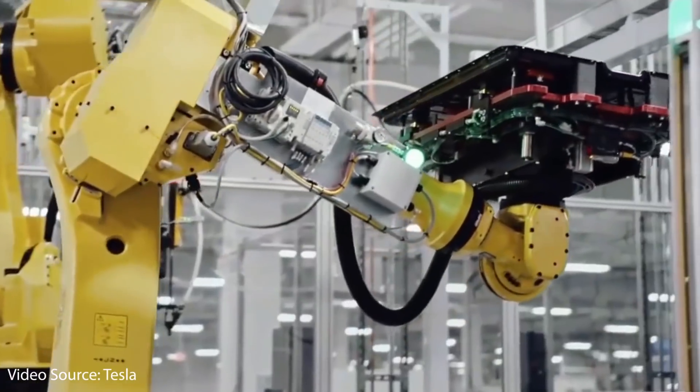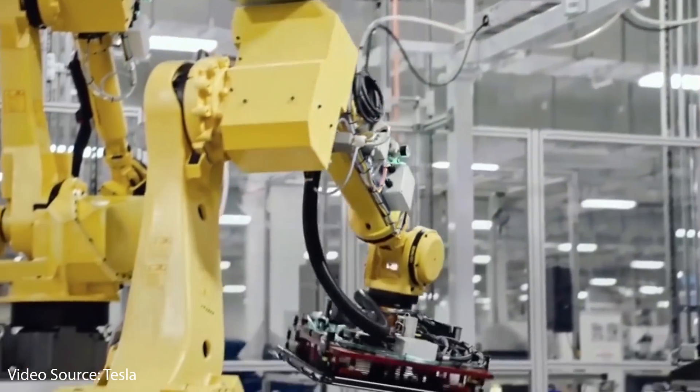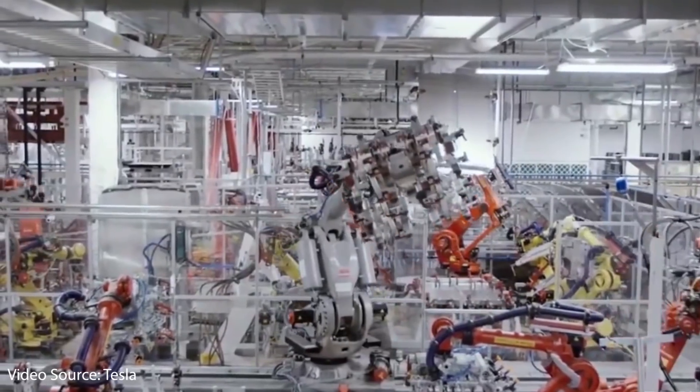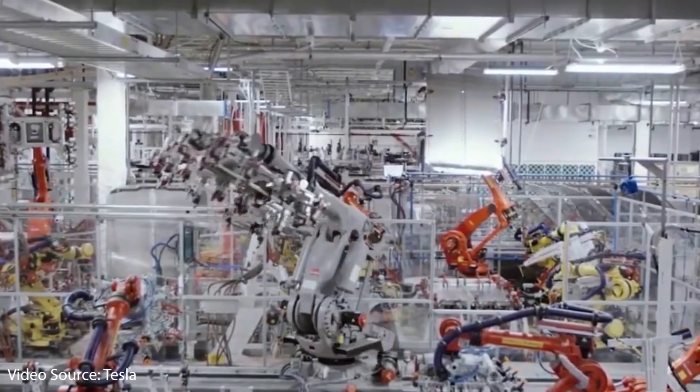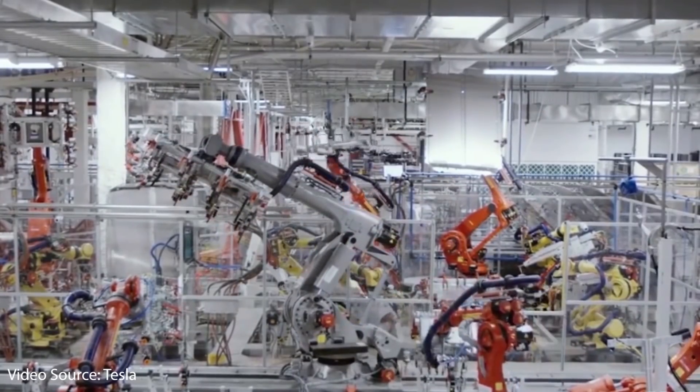This makes even more sense when you talk about Tesla setting up Model Y production in China at Gigafactory Shanghai. Why would they build this production line with the old technology, implementing the 2170 cells into a module and then into a pack and then inserting that into the frame of the vehicle?